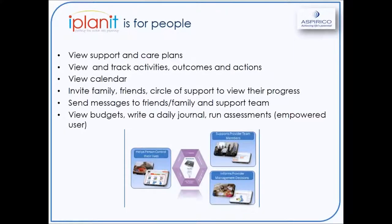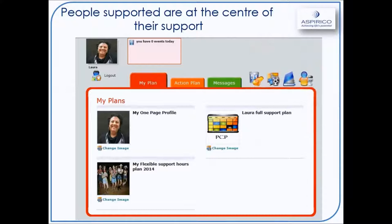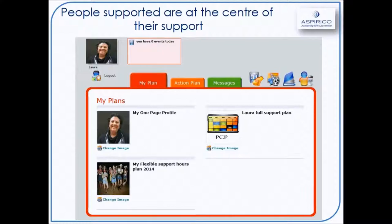iPlanet is for people. You can view support and care plans, view the calendar, invite family, friends, and circle of support to view their progress. Not only does this put the person in the centre of all their support plan, it also gives you evidence that you fully involve people in their service — from viewing their plans, uploading media, and tracking their outcomes and actions that their team members may have assigned to them.